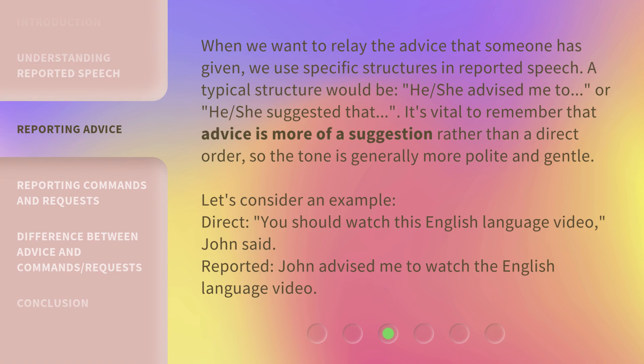When we want to relay the advice that someone has given, we use specific structures in reported speech. A typical structure would be: 'he/she advised me to...' or 'he/she suggested that...' It's vital to remember that advice is more of a suggestion rather than a direct order, so the tone is generally more polite and gentle. For example — Direct: 'You should watch this English language video,' John said. Reported: John advised me to watch the English language video.